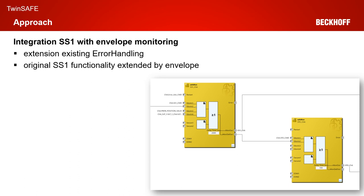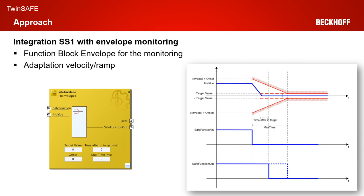Within the error handling, as you see in the right corner, we have two monitor function blocks realizing the standard SS1 functionality. This is exactly the point where we want to integrate our SS1 with envelope monitoring. Basically, we break up the original SS1 connection between the two SafeMonitor function blocks and we integrate our envelope monitoring.